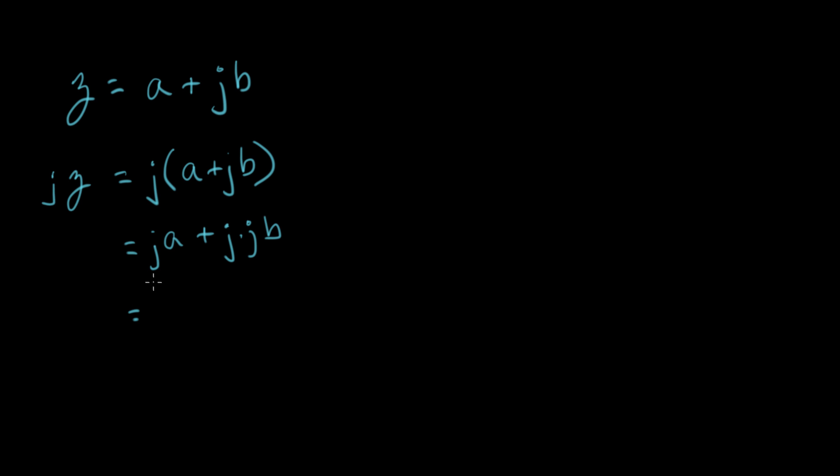A and b have now switched places. So we're gonna put ja on this side, ja on this side. And what do we have here? j times j is minus one, so we have minus b plus ja.